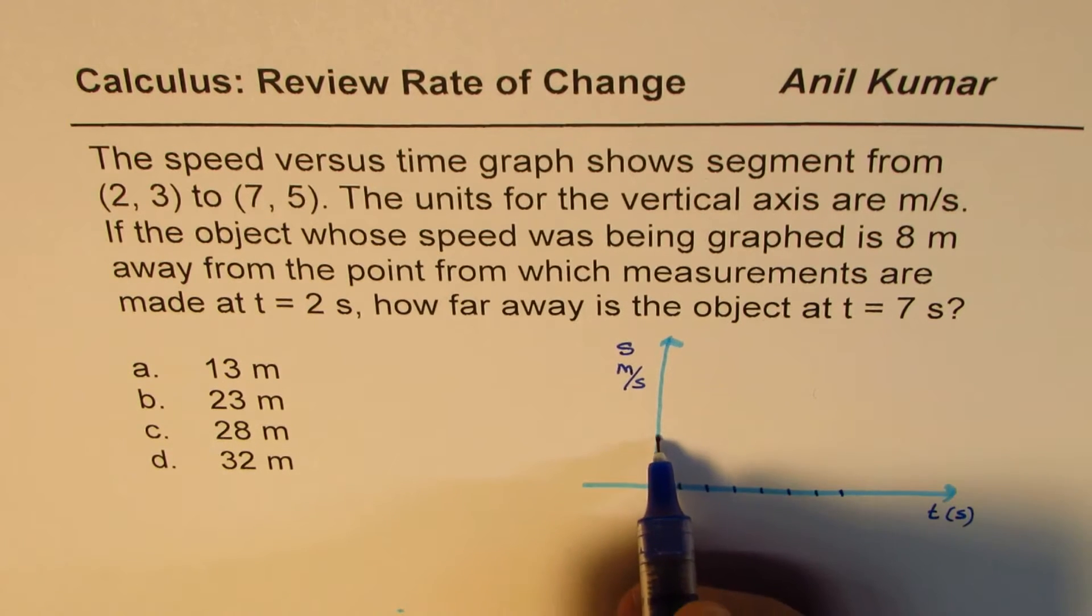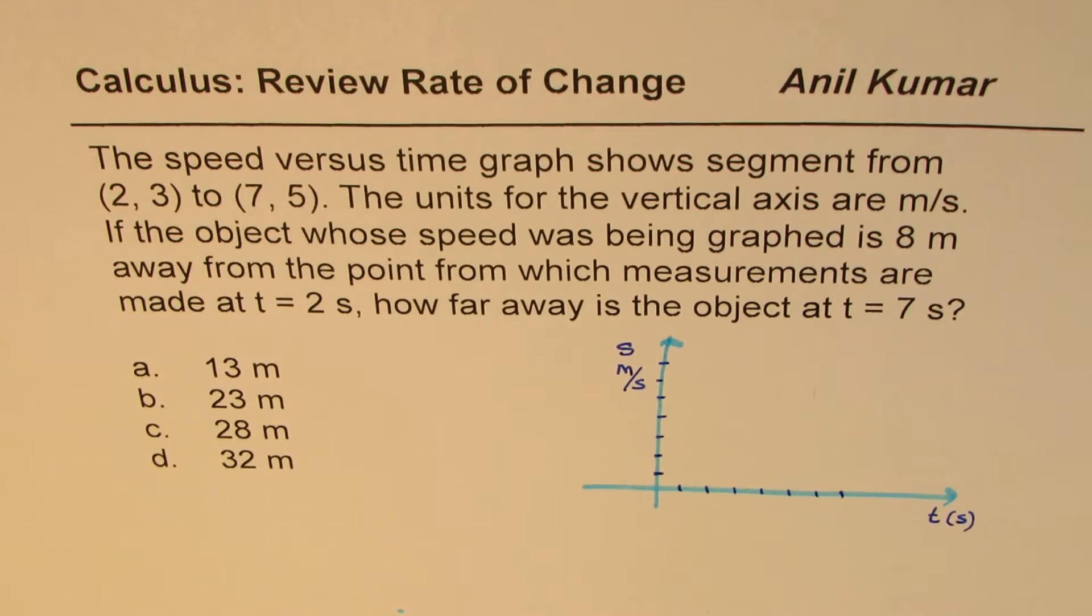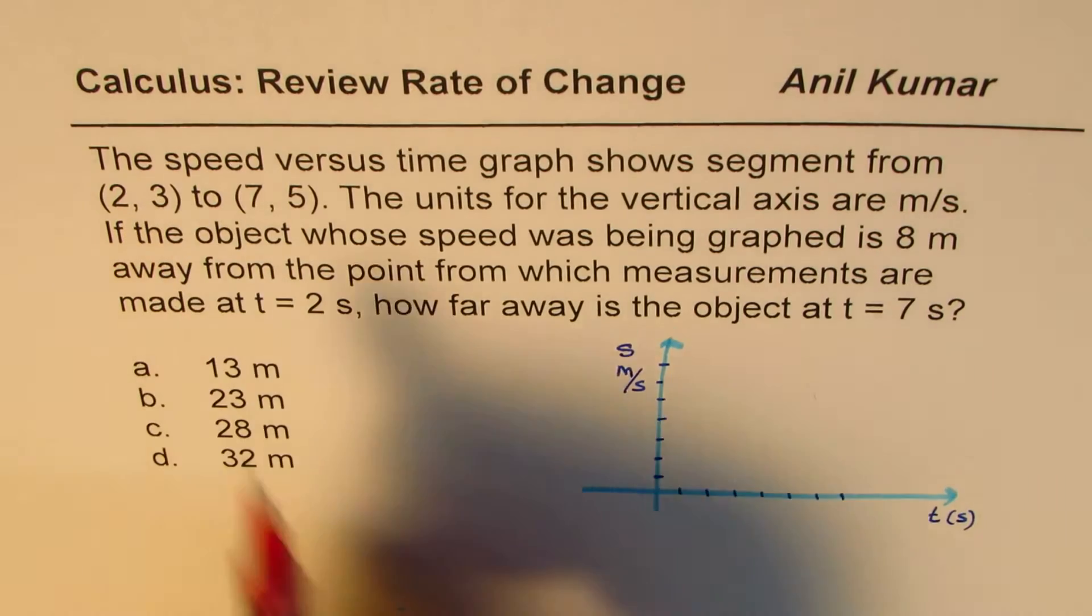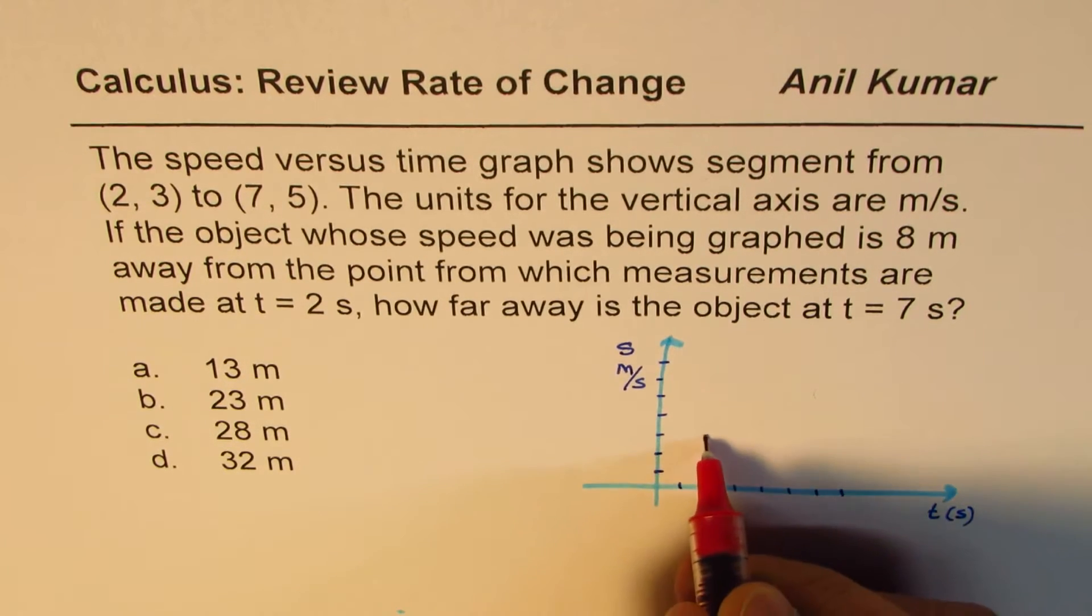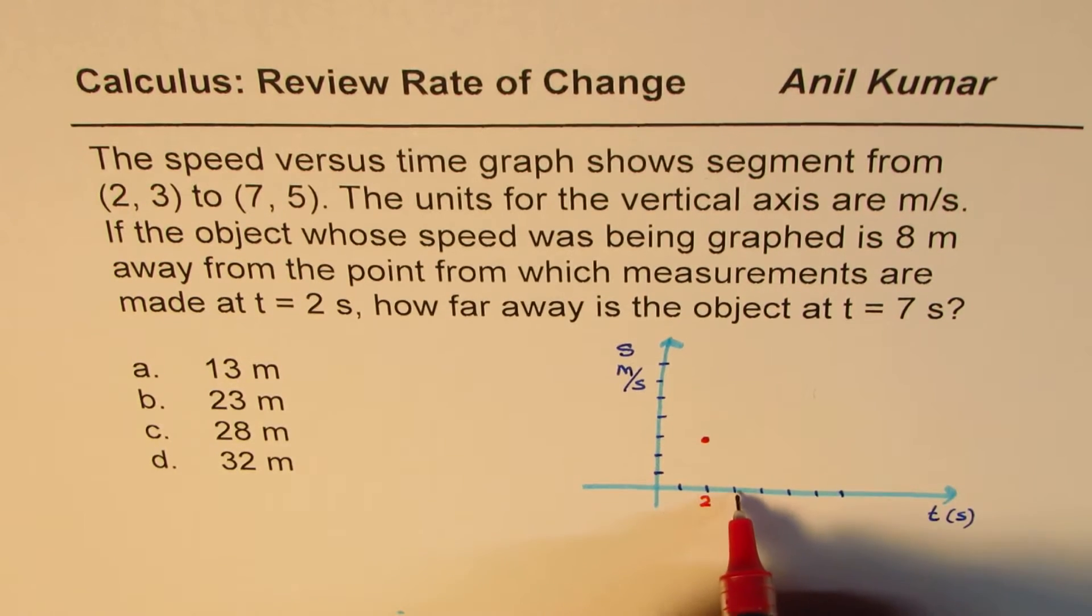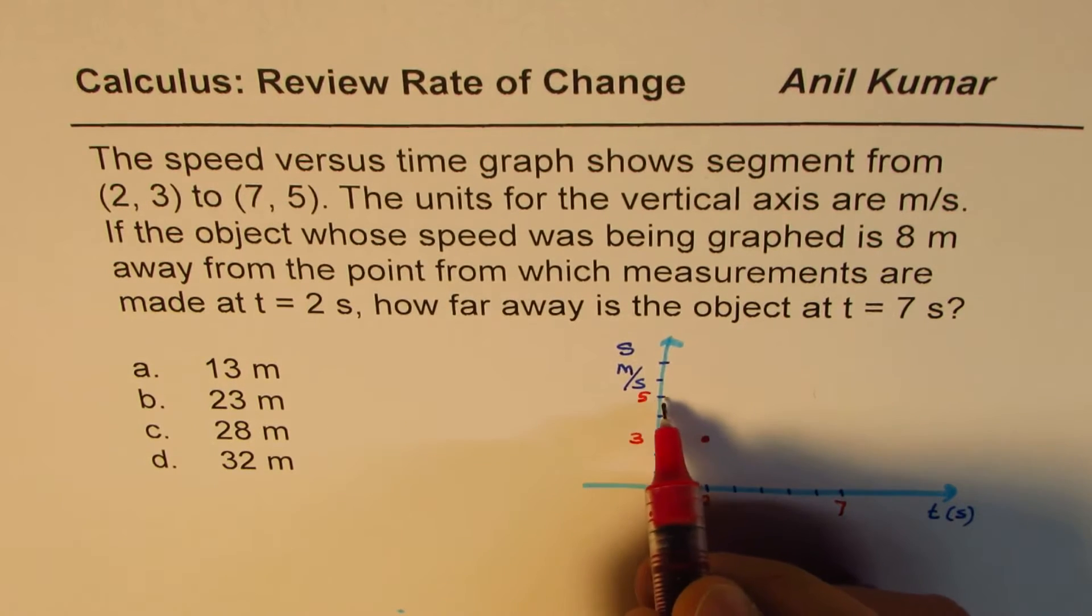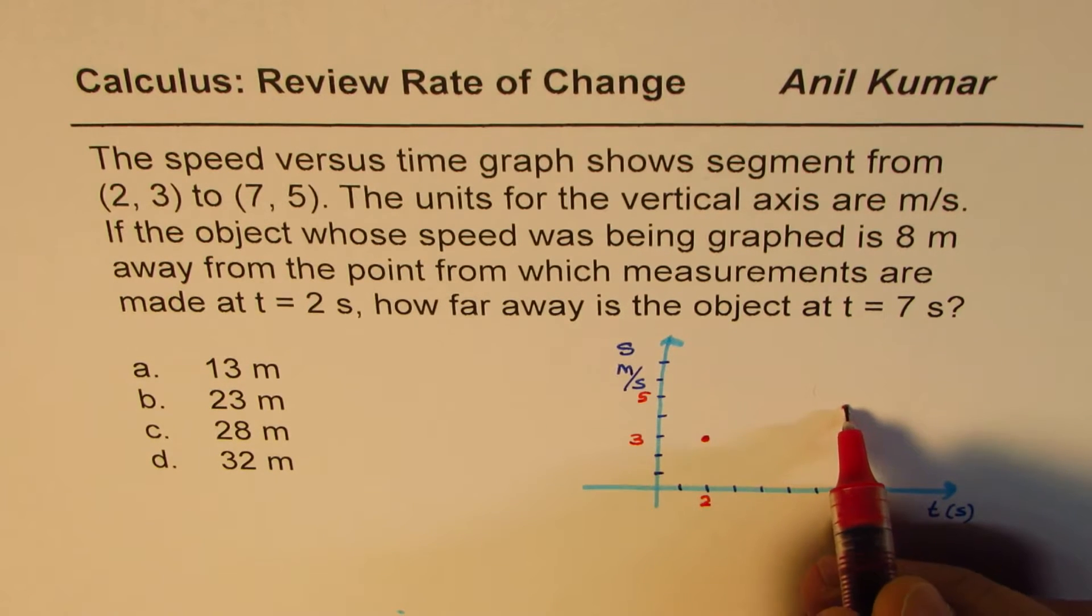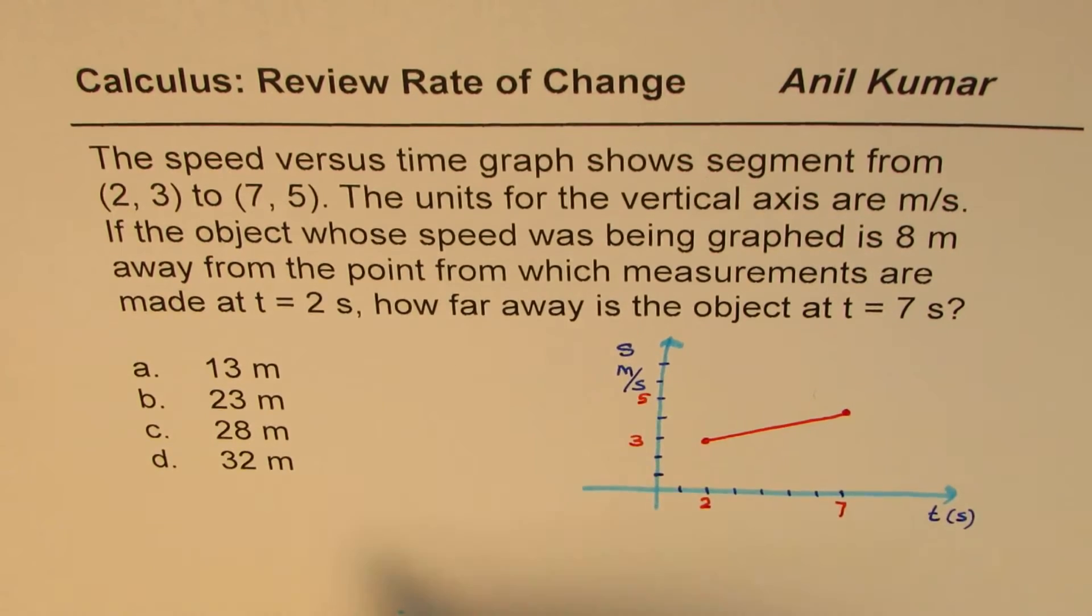When the object moves from location (2,3), that means 2 is right there and 3 on the vertical, so it is this position. From (2,3) to (7,5), so this is 7 horizontally and 5 vertically. So the object moves from this to that position, kind of like this.